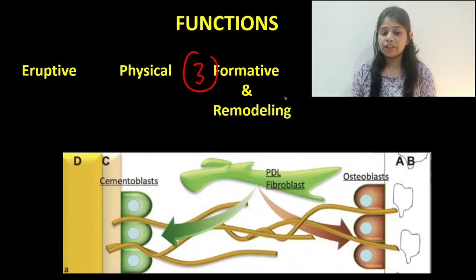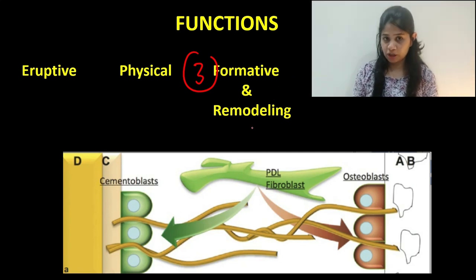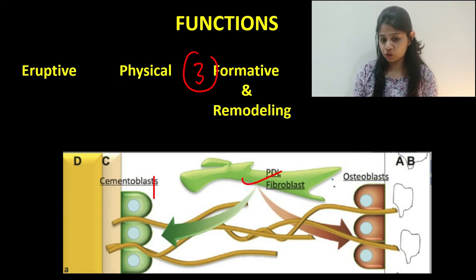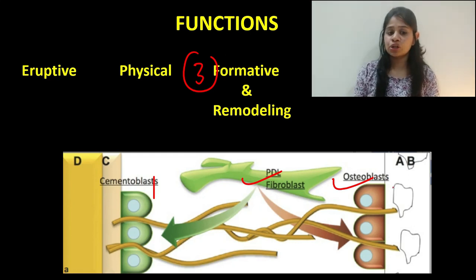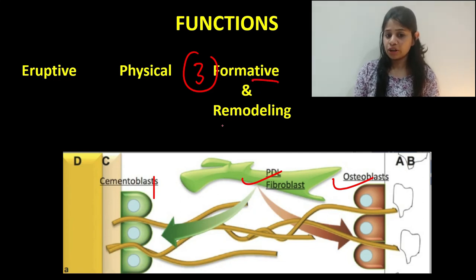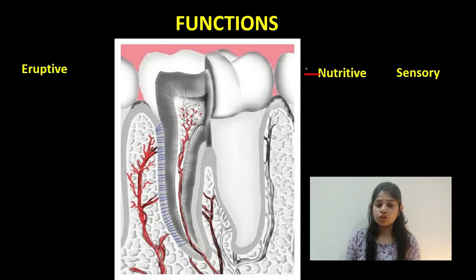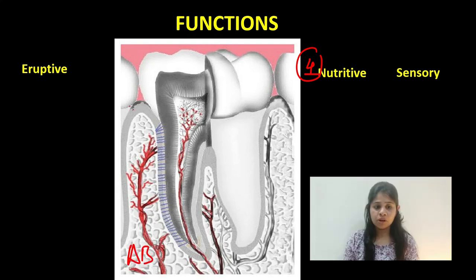The third function is the formative and remodeling function. Cementoblasts, periodontal ligament fibroblasts, and osteoblasts produce cementum, collagen fibers, and alveolar bone respectively, thus helping in the formation and remodeling of the periodontal ligament space. The fourth function is the nutritive function: the periodontal ligament has a rich vascular supply which provides nutrition to the alveolar bone, the gingiva, and the cementum of the teeth.